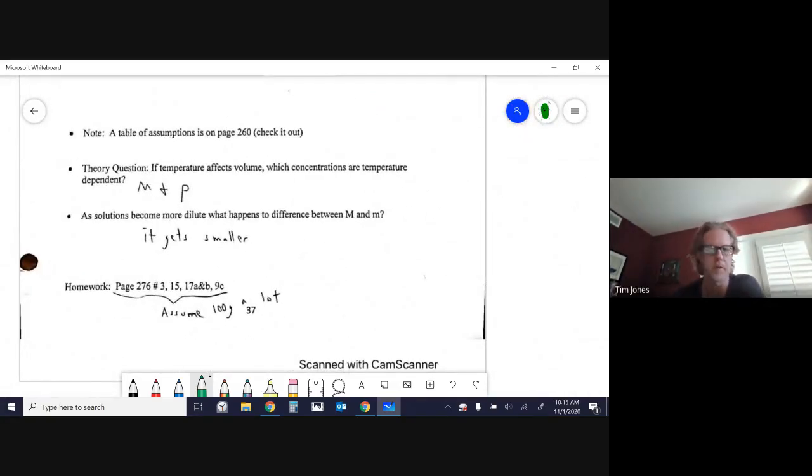It says theory question. If temperature affects volume, which it does a little bit when it comes to liquids, which concentrations are temperature dependent? In other words, which concentrations will change? It turns out it's molarity and density because both molarity and density have volume in their calculation. But what isn't affected is molality. Does not have volume in its calculation, so it stays constant.